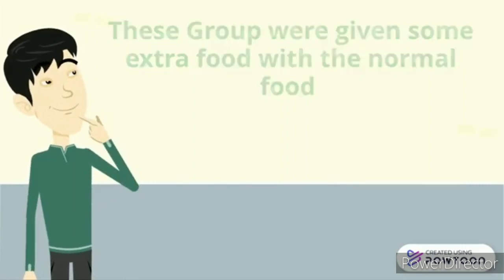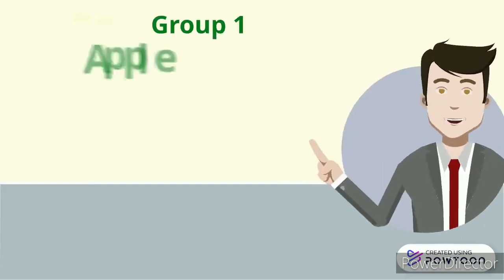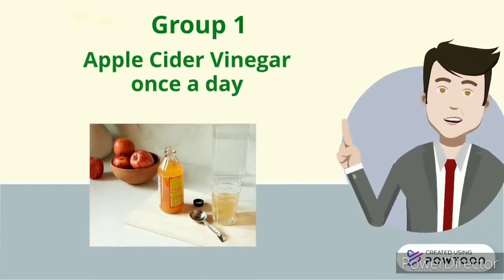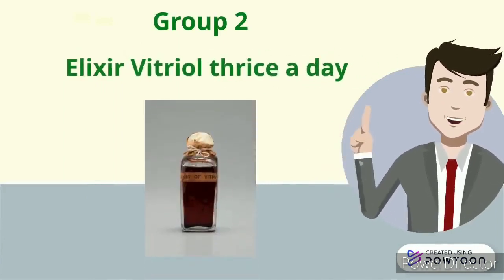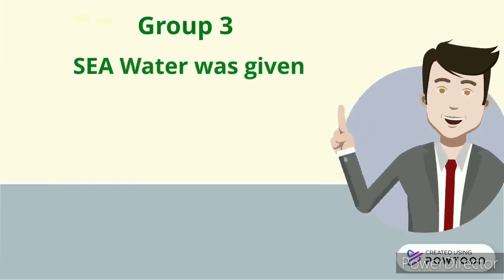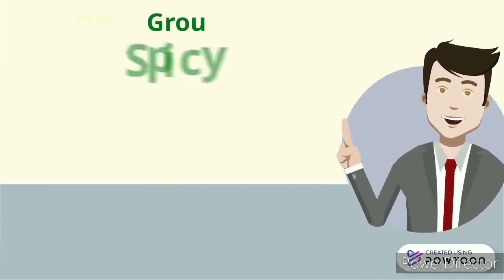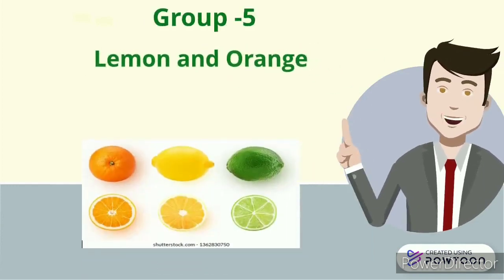To the first group he gave apple cider vinegar once a day. To the second group he gave elixir vitriol thrice a day. To the third group he gave seawater. To the fourth group he gave some spicy paste. To the fifth group he gave lemon and orange. To the sixth group he gave barley and water.